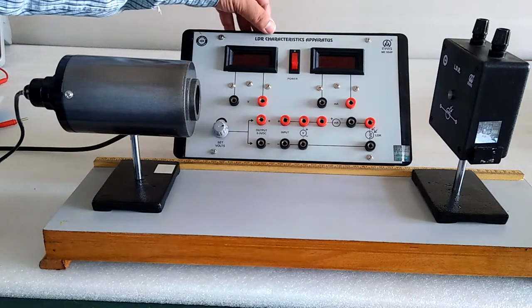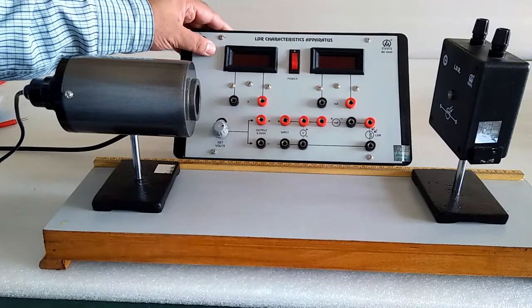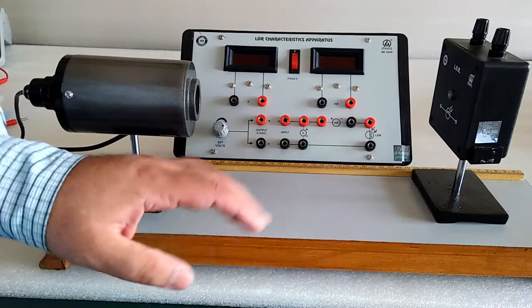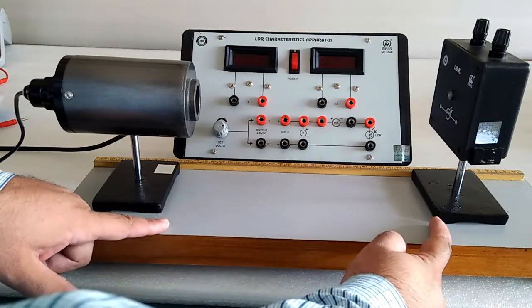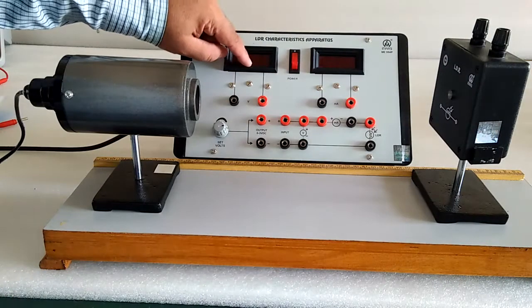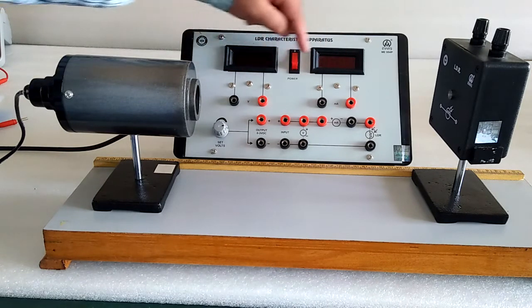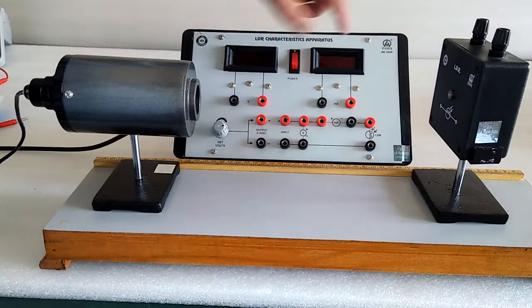Here is the LDR characteristic apparatus. The aim of the experiment is to find the characteristics between the distance and the resistance of the LDR. Here we have a voltmeter and a current meter to find the resistance of the LDR.